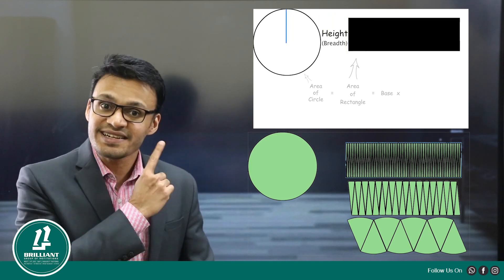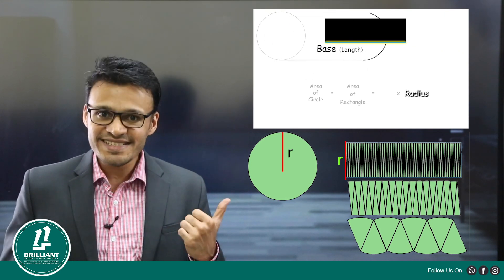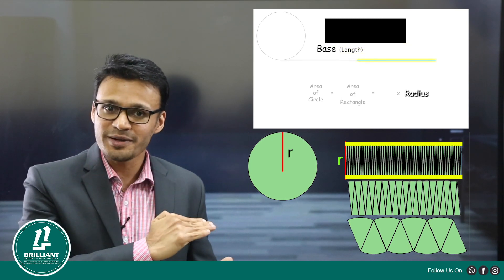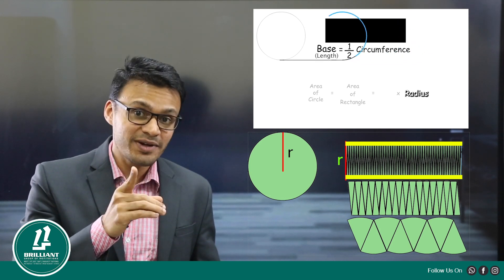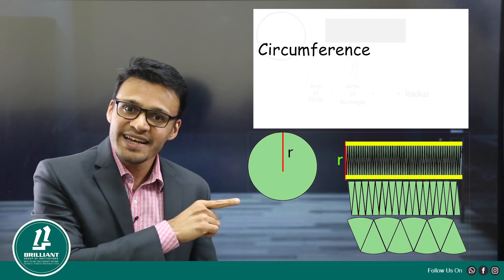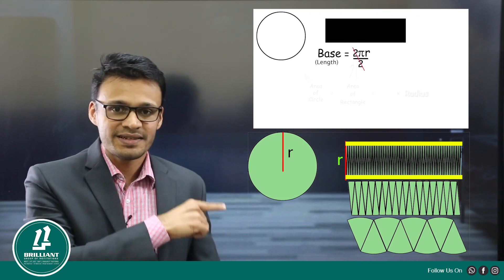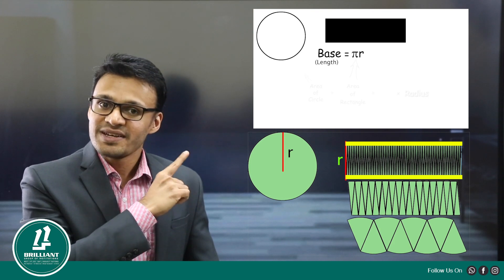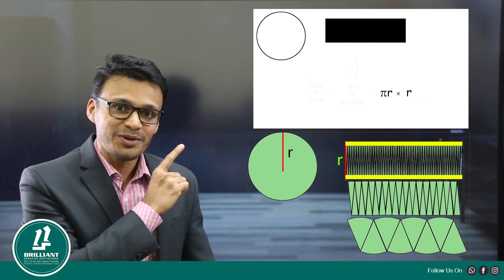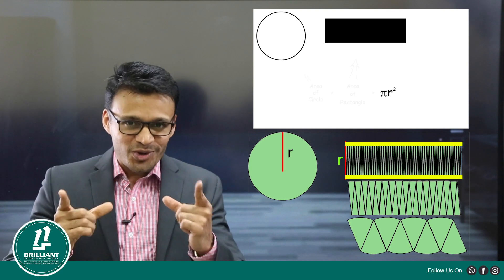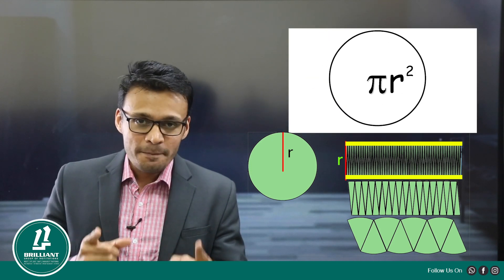What is the breadth of our rectangle? The breadth of the rectangle is the radius of our circle. What is the length of the rectangle? The length is half of the perimeter — half perimeter up, half perimeter down. The perimeter is 2πr, so the length of this rectangle is half of 2πr, that is πr. So length is πr, breadth is r. Area of rectangle is length into breadth — so area of the circle is πr × r = πr².